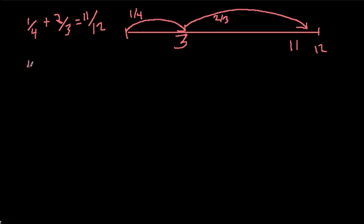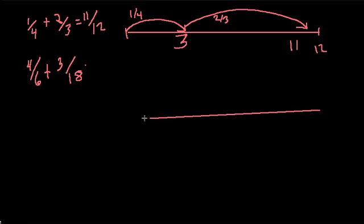The next one, we've got 4/6 plus 3/18. Okay, so double number line. What's a friendly number? What's a multiple of 6 and 18? That's 18. They both go into it.